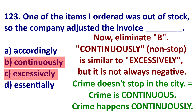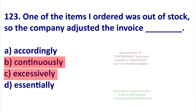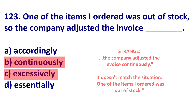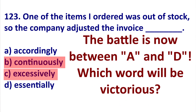Next, eliminate B: 'continuously.' Continuously means non-stop — it keeps happening. For example, crime doesn't stop in the city, so crime happens continuously. If somebody changes or alters an invoice continuously, they keep doing it again and again. This is not logical in this situation, so eliminate B.